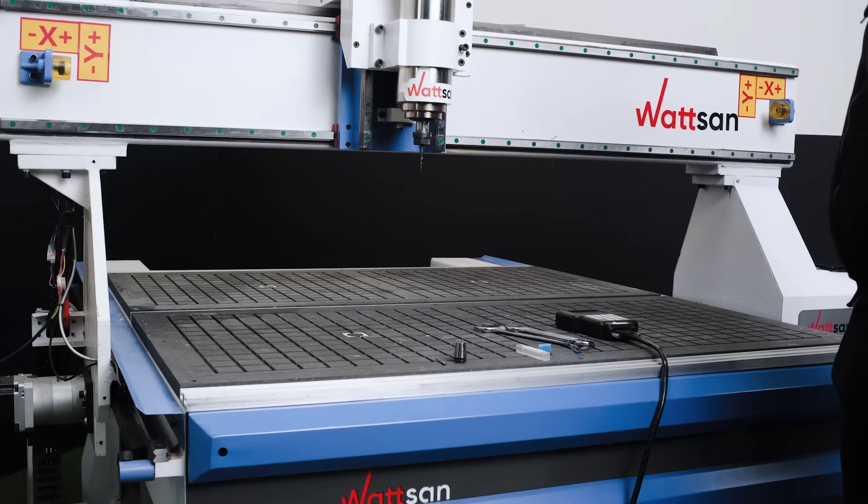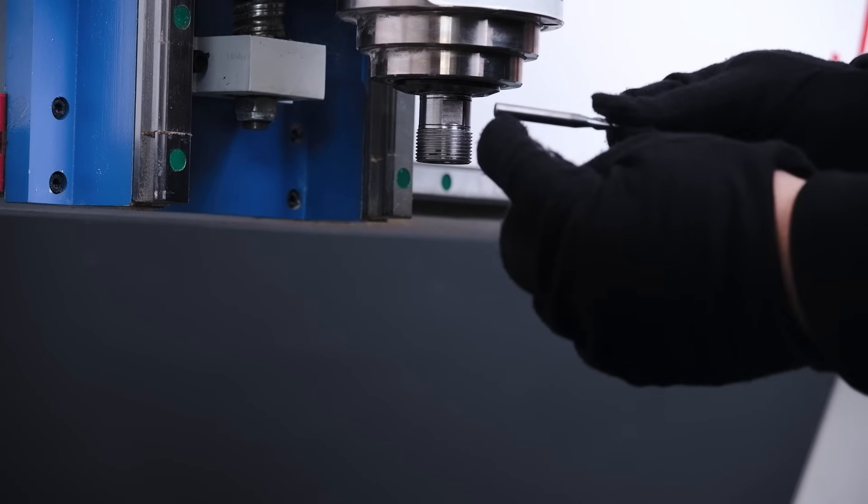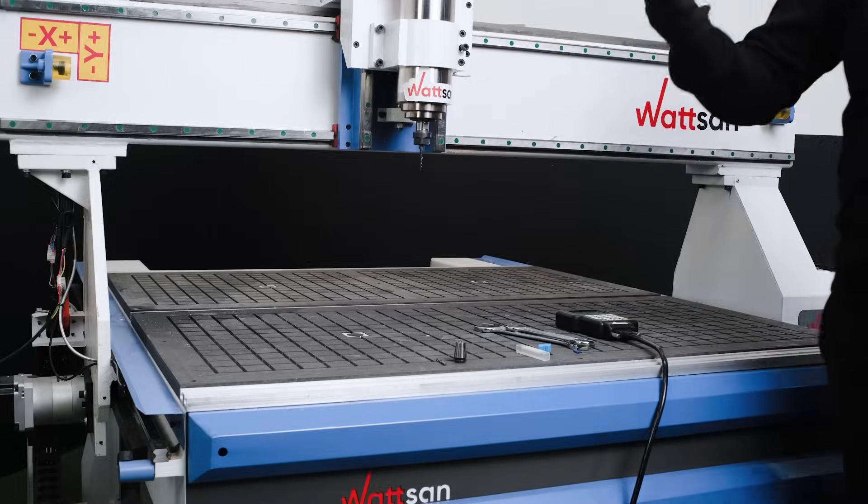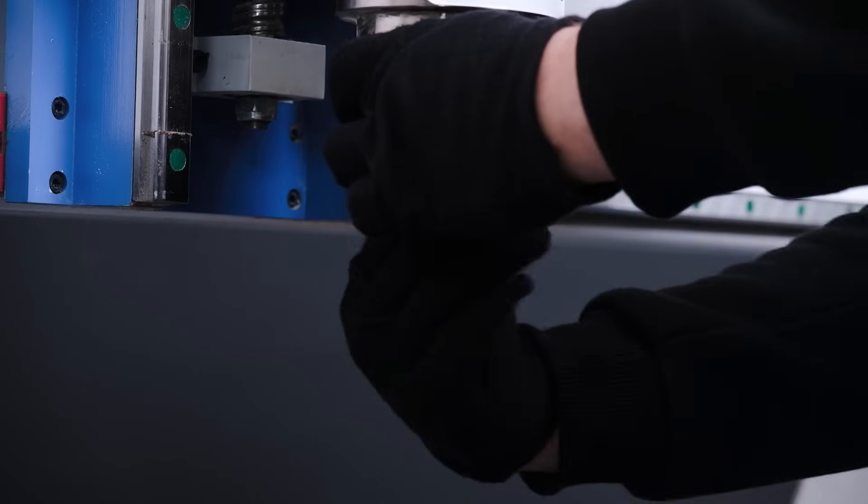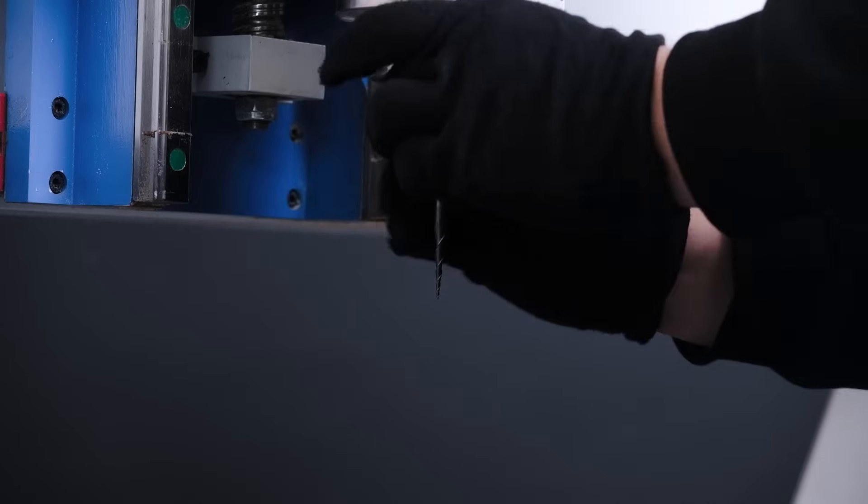There's also a rule: the tool overhang should not be more than eight times its diameter, with the rest of the shank securely fixated in the collet. However, keep in mind that thin and long tools exist, and this rule may not apply when working with them.